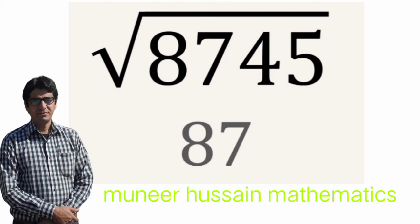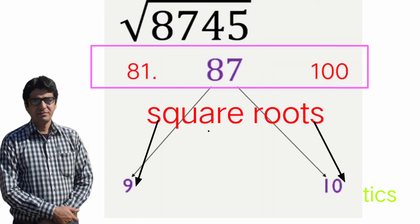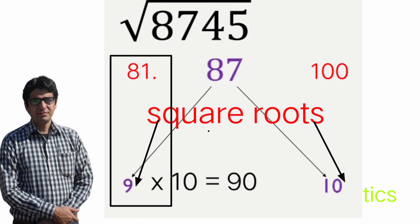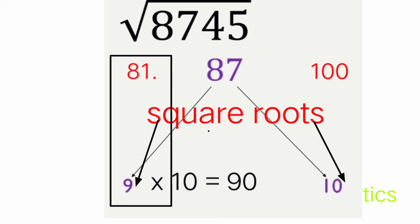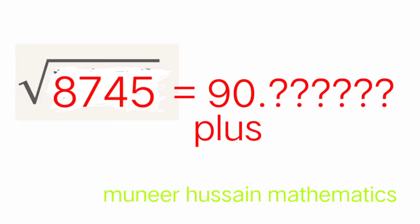Now we check between which two perfect square numbers 87 lies. 87 is between 81 and 100. So our first estimation is that the answer is between √81 × 10 = 90 and √100 × 10 = 100. Since 8745 is a four-digit number, our estimated answer is 90-plus.